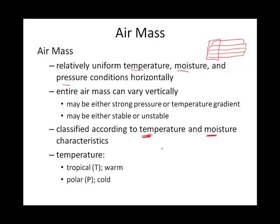With regard to temperature, we have three choices. It can be warm — sometimes I call this hot — and we use the capital T, which represents the word Tropical. If it's cold, we use the capital P for Polar. And if it's very cold, we use the capital letter A for Arctic. So three different temperature categories, and your air mass will have one of these letters associated with it.